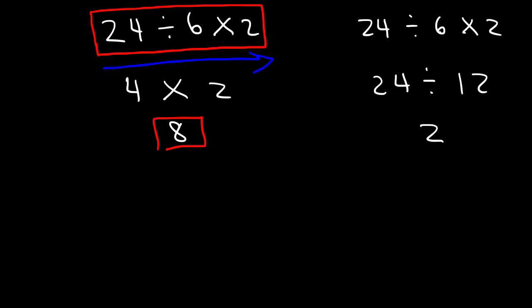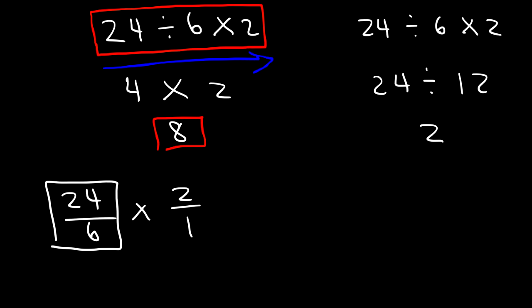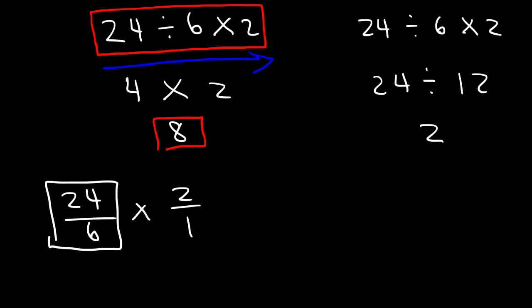Another way to see this expression: 24 divided by 6 is a fraction, and then you multiply by 2, which is the same as 2 over 1. So 24 divided by 6 is 4, and 4 times 2 is 8. Another way is to multiply 24 by 2, which is 48, and then divide by 6. That will also give you 8.